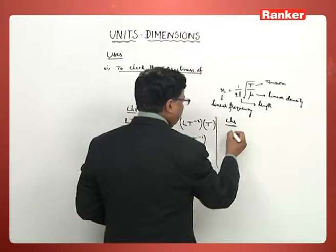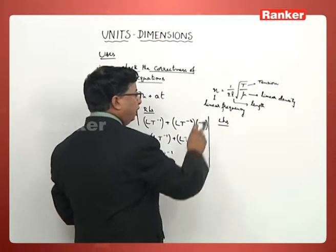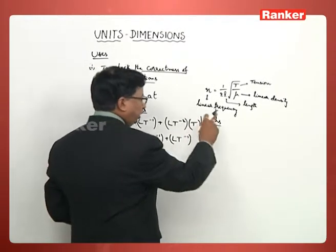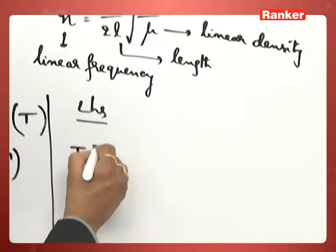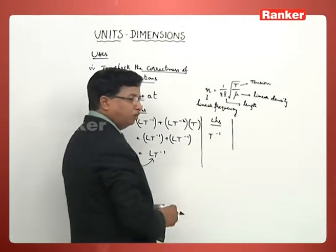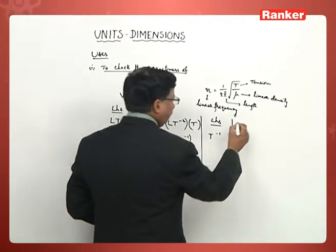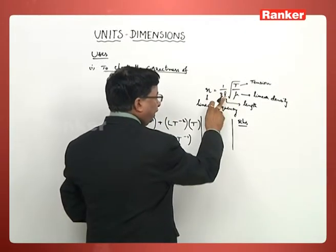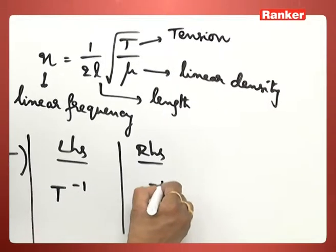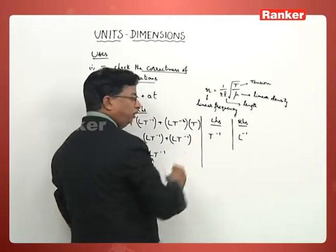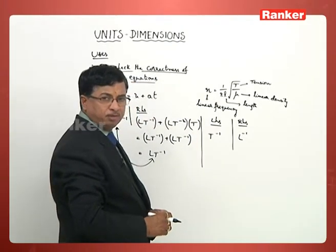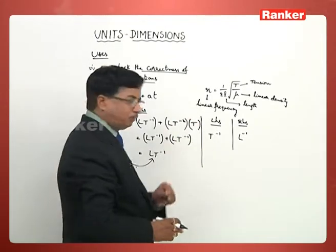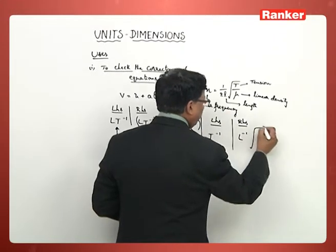Again, let us write the dimensional formula of the quantity on the left-hand side. N is linear frequency, which has dimensional formula T⁻¹. Now coming to the right-hand side: 1 by 2 is a constant with no dimensional formula. 1/L can be written as L⁻¹. After that, we have a square root.